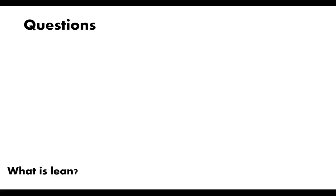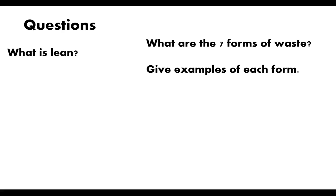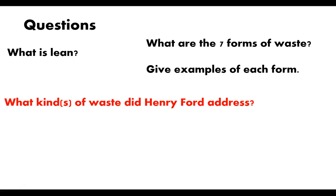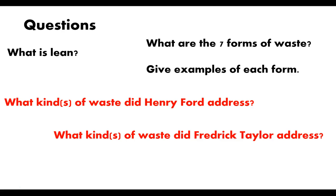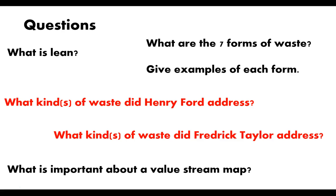Some questions — if you can't answer these, go back and re-watch this video. One: what exactly is Lean? Can you answer that without looking at your notes? What are the seven forms of waste — and give examples of each one. What kinds of waste did Henry Ford address, and which of the seven forms of Muda did he actually address? And when you consider what Frederick Taylor did, what kinds of waste did he address? What is important about a value stream map? Well, this is Professor Cummings, and this is just a brief overview of Lean. I'll come back for other lectures in this module. Thanks for watching.